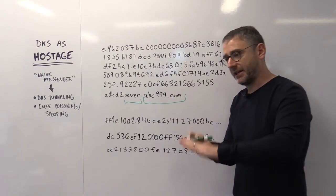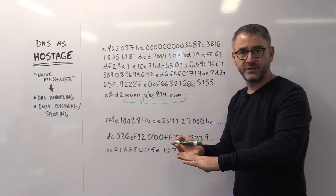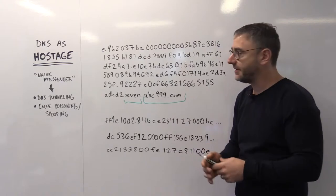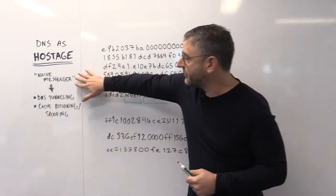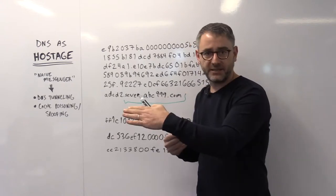For instance, I can exfiltrate data. For instance, I can request commands from command and control if I'm a botnet. Multiple types of messages can be sent back and forth. It's basically a VPN connection over DNS.